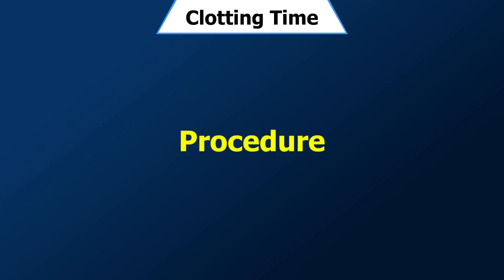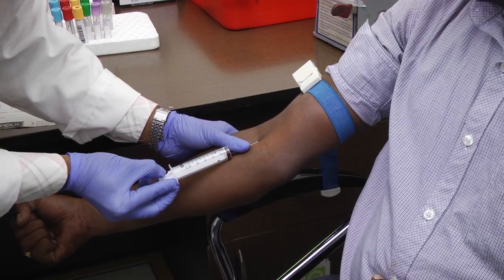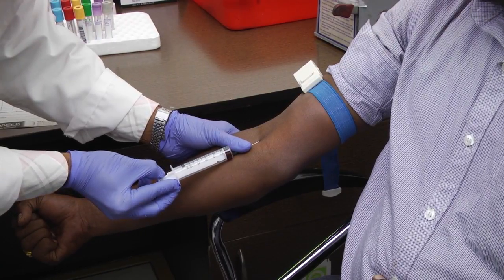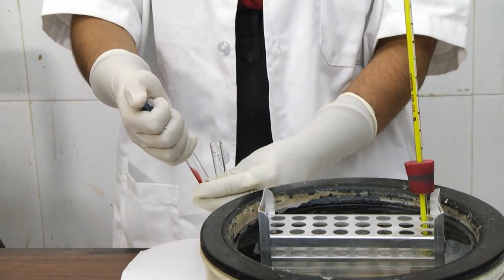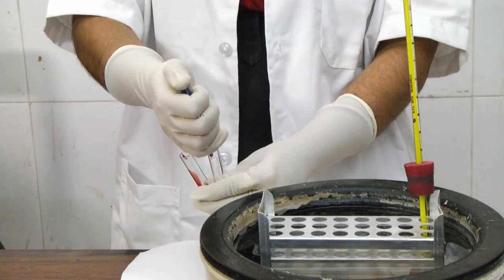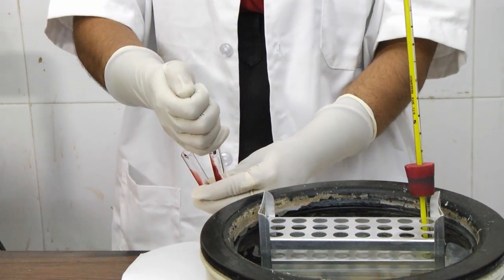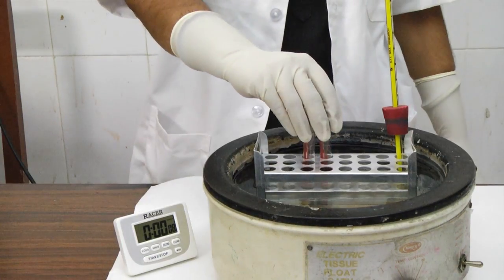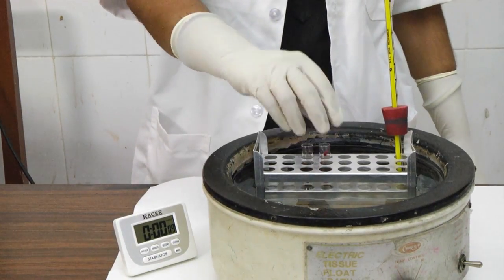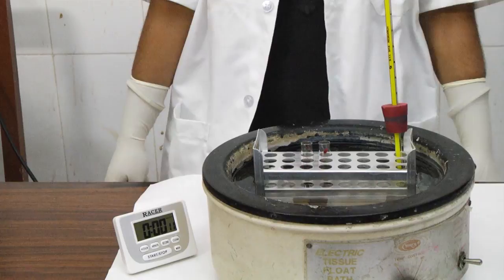Procedure: Collect venous blood according to the technique described in the phlebotomy section. Pour the collected blood sample into two standard size glass tubes. Start the stopwatch and keep these tubes at 37 degrees centigrade in a water bath.